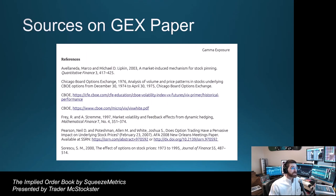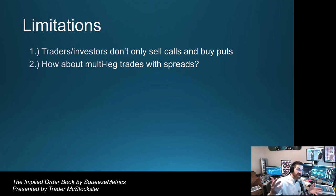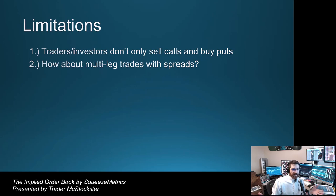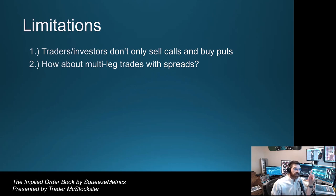Here are their sources for that paper. Before moving on to the implied order book, a couple of limitations: traders and investors don't only sell calls and buy puts. And then there are multi-leg contracts — spreads, four or five-leg contracts — so those assumptions also kind of imply it's a single directional option, which is not really reality. Moving on to the implied order book.